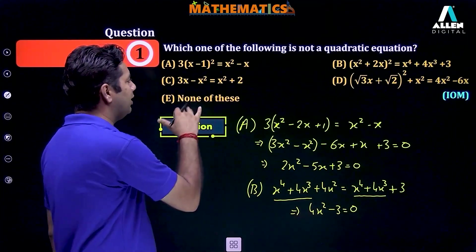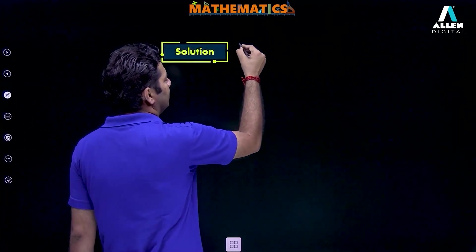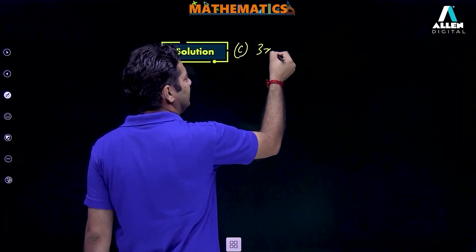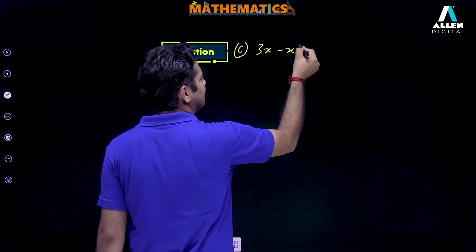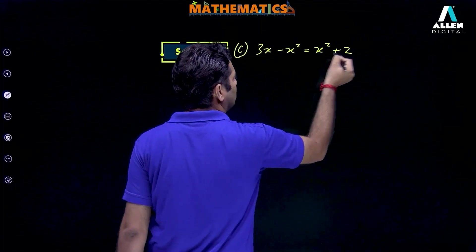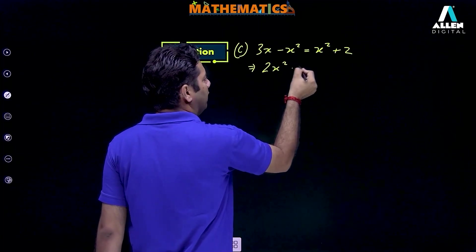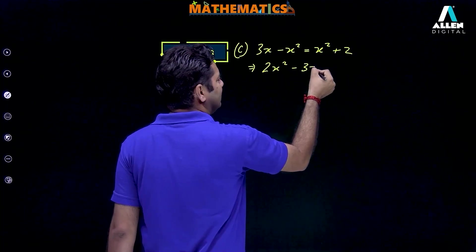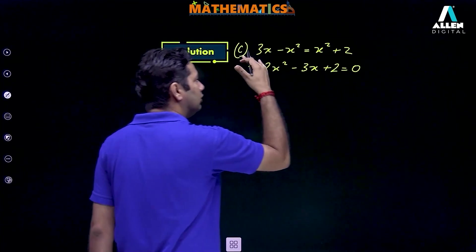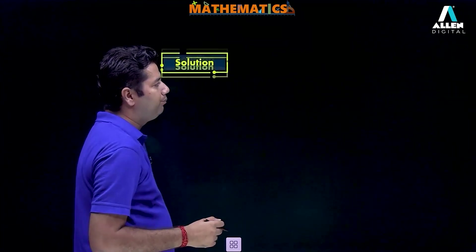For the third option: 3x minus x square equals x square plus 2. From this we get 2x square minus 3x plus 2 equals 0. This is again a quadratic equation.